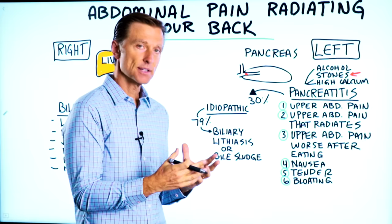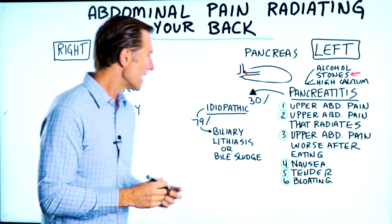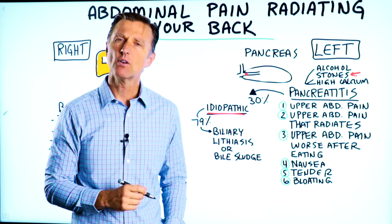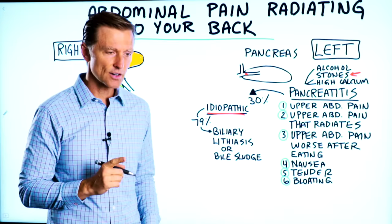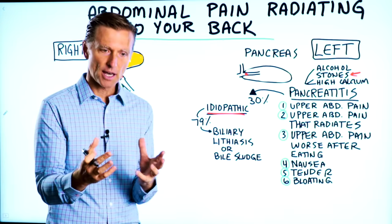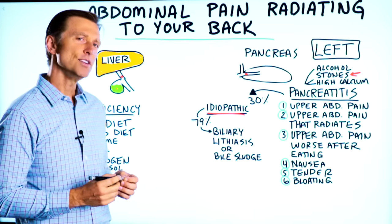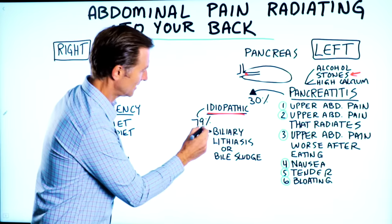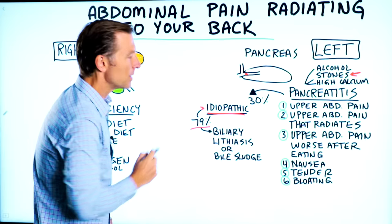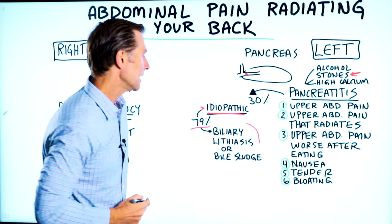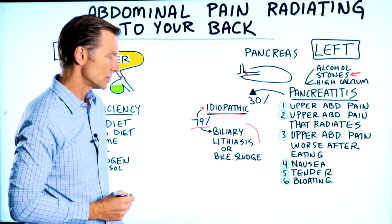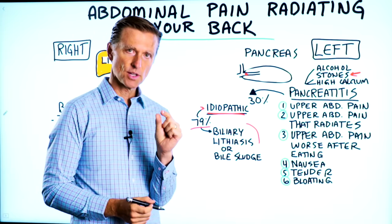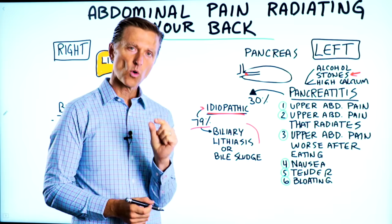There's another cause of pancreatitis that occurs 30% of the time, called idiopathic pancreatitis — meaning unknown cause. An interesting article found that 79% of the cause of idiopathic pancreatitis is something called biliary lithiasis, or bile sludge. This means a very, very small gallstone that is not detected on ultrasound or a CAT scan.